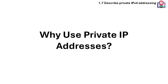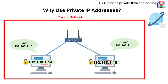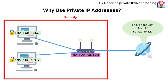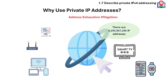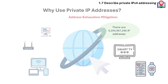Why do we use private IP addresses? Private IPv4 addresses are used to enable devices within a local network, like a home or office network, to communicate with each other without needing a public IP address on the internet. Private IP addresses are not directly accessible from the internet, adding an extra layer of security for internal networks. They also help conserve the limited pool of available public IPv4 addresses.